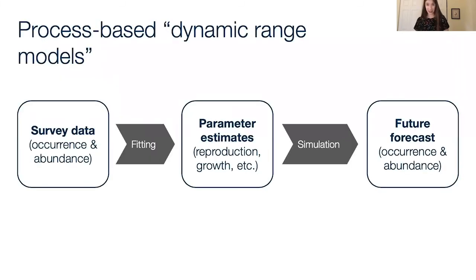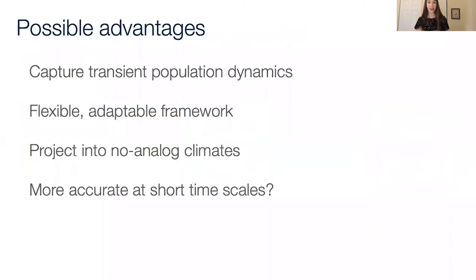The approach that we're taking is to unpack this black box into a more explicit model. We start with our survey data. This doesn't require additional data compared to other approaches, although it's nice if we have a lot of it. You fit a model, a population model about growth, dispersal, to that data to estimate key parameters. Once you have those parameters in hand, you can simulate the future and end up with a forecast of occurrence and abundance. If this works, it would be great because we could capture transient population dynamics. It's a framework that's very flexible and could be used to incorporate important ecological processes and answer management questions. We could project into no-analog climates using these functional relationships between process rates and temperature. And hopefully it would be more accurate at short timescales, which is the timescale at which we're much more useful to managers.